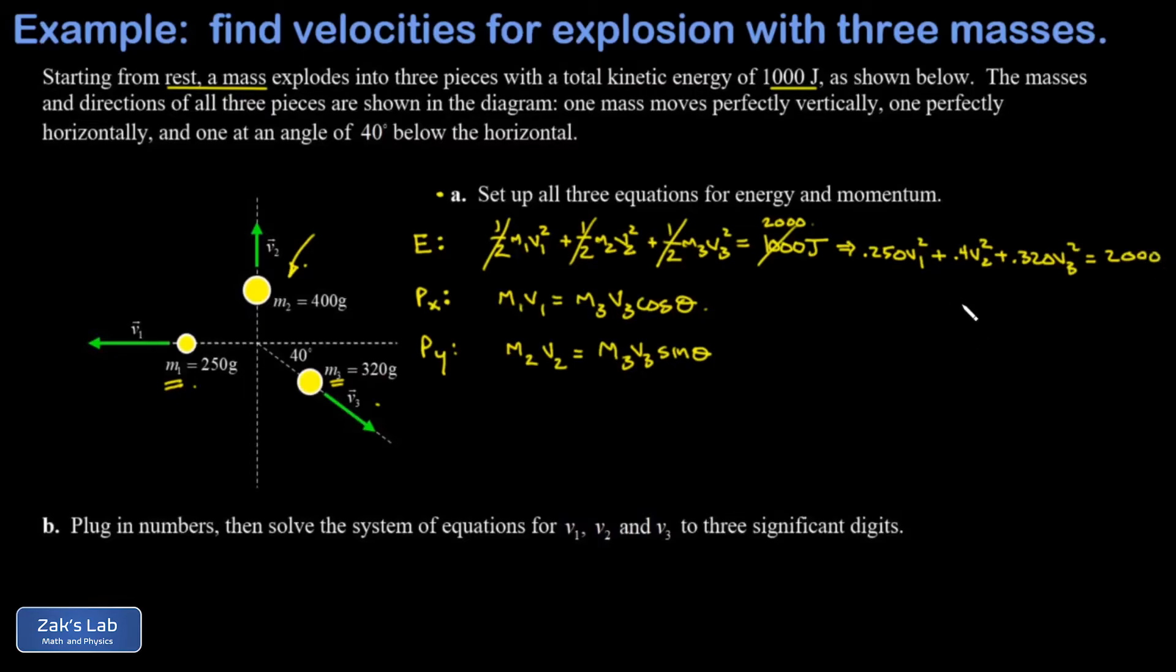So there's our first equation with numbers in it. Then we plug numbers into our x-momentum equation. m1 v1 - that's 0.250 v1, is equal to m3, that's 0.320 times v3 times the cosine of 40 degrees. We do the same for the y-momentum. m2 v2, that's 0.4 v2, is equal to m3 v3 - 0.320 v3 times the sine of 40 degrees. So now we have our system of three equations and three unknowns.